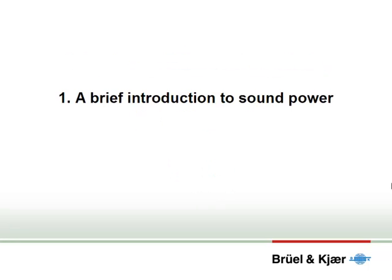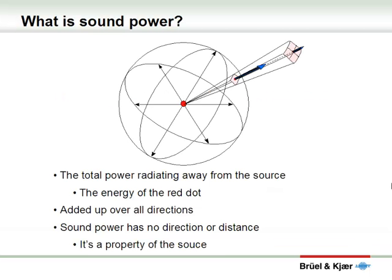First let's look at sound power. What is it and what is it used for? Sound power is the total acoustic energy radiating away from a source. In this picture you will see a red dot at the center. Sound power is the total energy of that red dot. Sound power is the sum of energy over all directions and therefore has no distance or direction of its own. It's a property of the source.